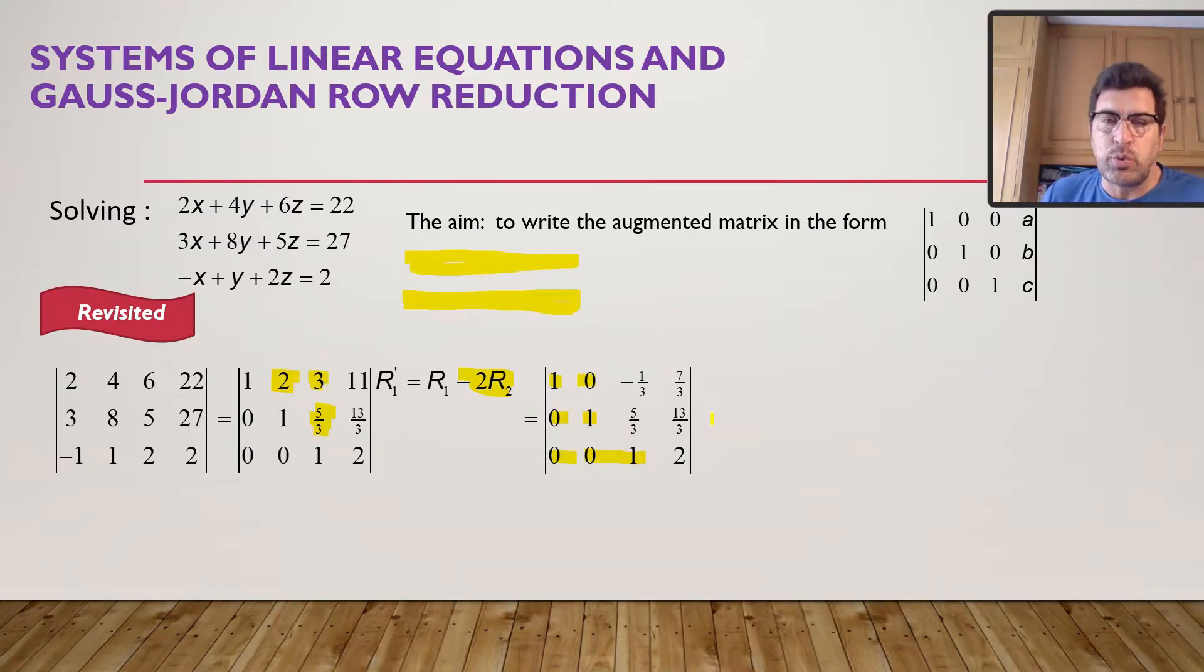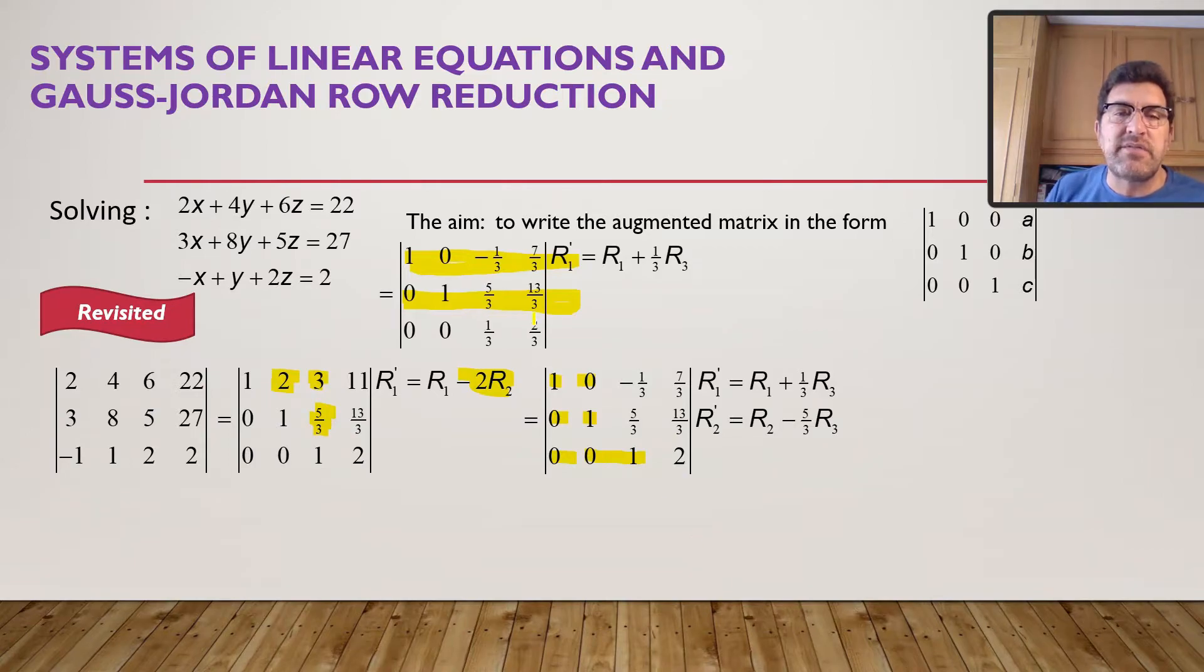A new row 2 will be the old row 2 minus 5 over 3 times row 3. And the same for row 1. A new row 1 will be the old row 1 plus a third times row 3. That takes care of the fractions. Now, if I do that, look at what I've done.